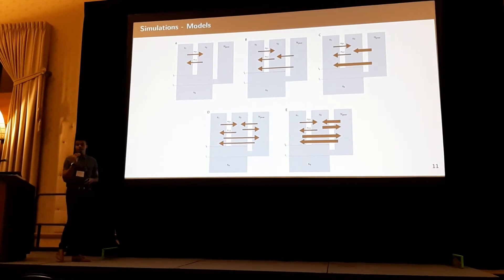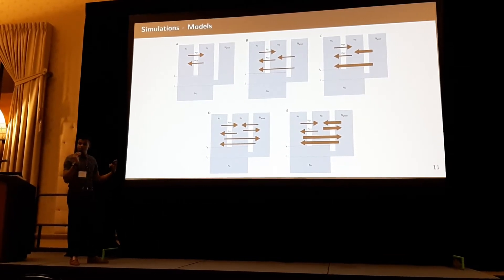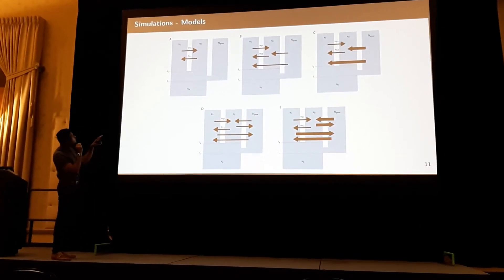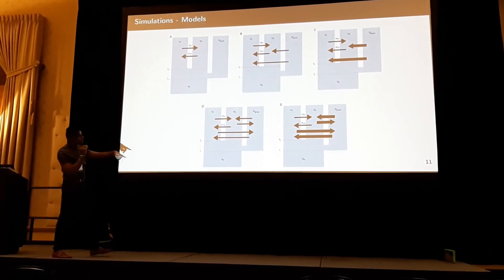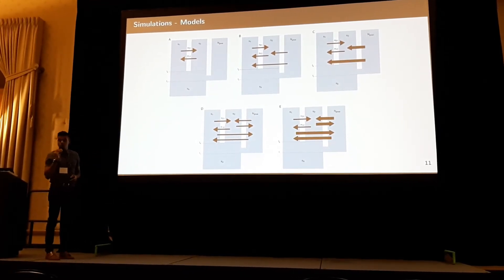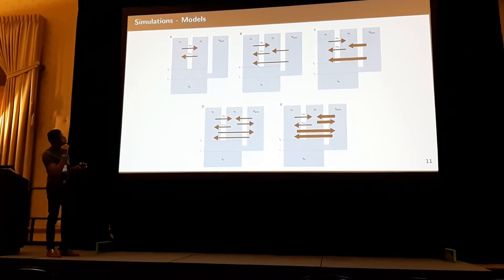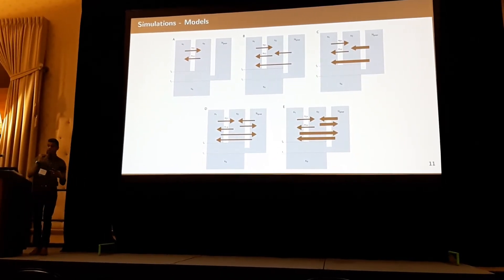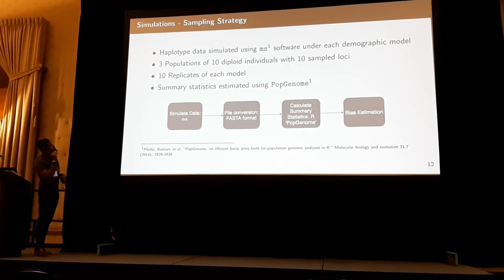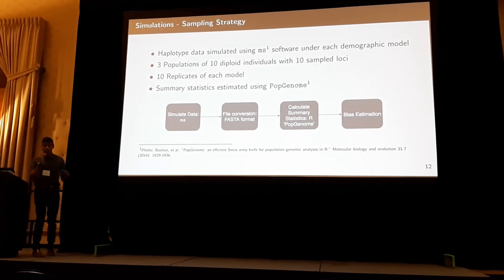We simulated under a variety of isolation with migration models — the same models Peter used, except his were under an island model; ours are under an isolation with migration model. Starting with a model with no gene flow from the unsampled ghost population, all the way up to model E with lots of gene flow from the ghost. We simulated habitat data using MS: three populations, ten diploid individuals, ten sampled loci, ten replicates under each model, and estimated a bunch of summary statistics.